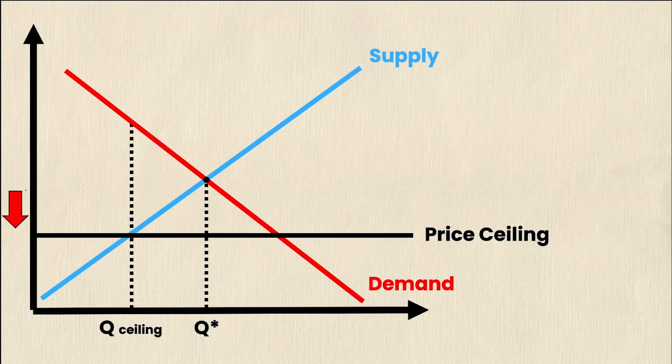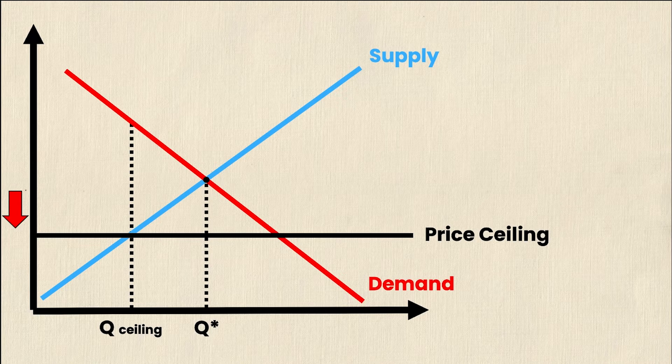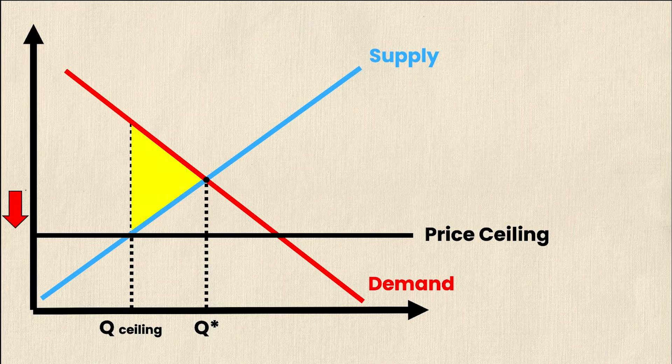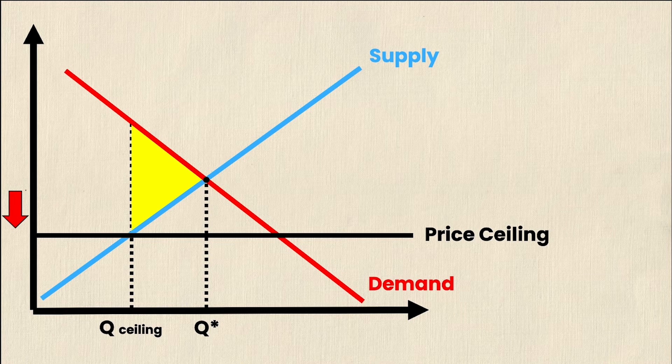However, similar to a price floor, a price ceiling also leaves the market in disequilibrium, creating yet another deadweight loss. Price ceilings lead to excess demand, also known as a shortage, wasted resources, black markets, and inefficient allocations to buyers.